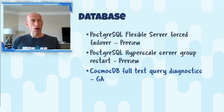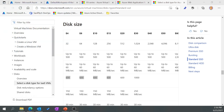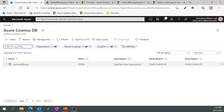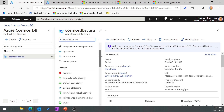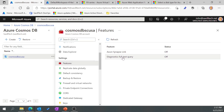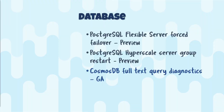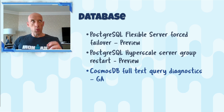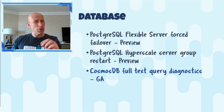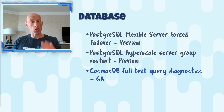Cosmos DB now has this full text query diagnostic option. With Cosmos DB, we get logging data, but sometimes it's hard to understand what query caused what. Now we have this diagnostics full text query option I can turn on, which will show me the de-obfuscated query — the full text of the query — making it easier to identify performance and optimization issues. This works with the Core SQL API, the API for MongoDB, and Gremlin. Just be aware it does some extra logging, so there may be some extra costs.